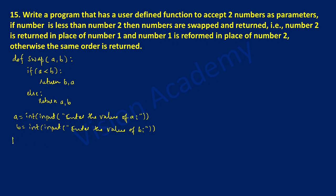Now we will print the variable values before swapping. In double quotation marks, I will write 'before swapping, a is equal to', end the quote, put comma, write a, then in double quotes write 'and b is equal to', end the quote, put comma, and then write b and close the bracket.